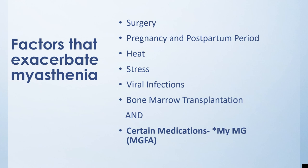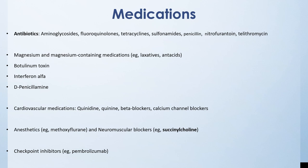Factors that exacerbate myasthenia include surgery, pregnancy and postpartum period, heat, stress, viral infections, bone marrow transplantation, and certain medications. The Myasthenia Gravis Foundation of America maintains an updated list of medications that could interact. Telithromycin has a black box warning; many others are relative contraindications. If reasonable alternatives exist, patients can discuss switching with their other physicians, but if a patient absolutely needs these medicines, we closely monitor and can adjust if they decline.